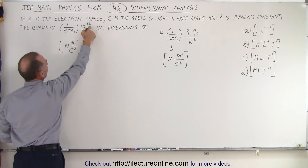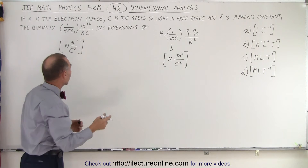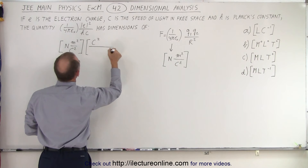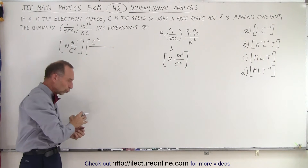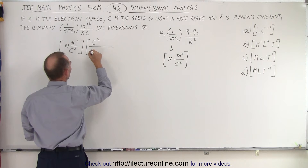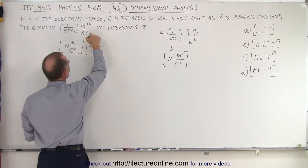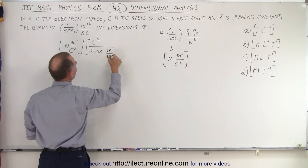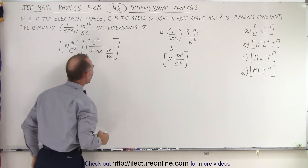The units for charge are Coulombs, and since we have charge squared, we need Coulombs squared in the numerator. So we have Coulombs squared divided by Planck's constant, which is joules times seconds, and the speed of light is in meters per second.